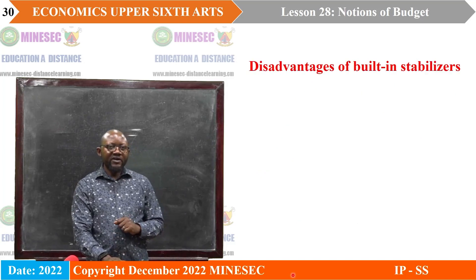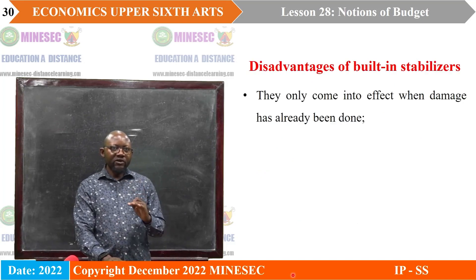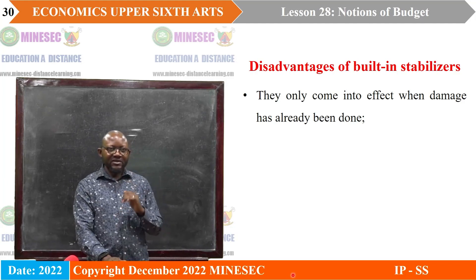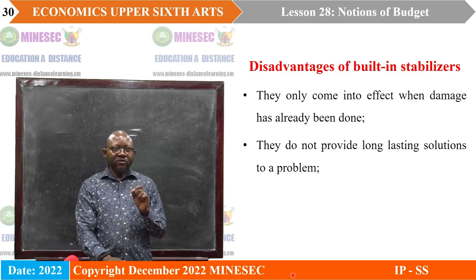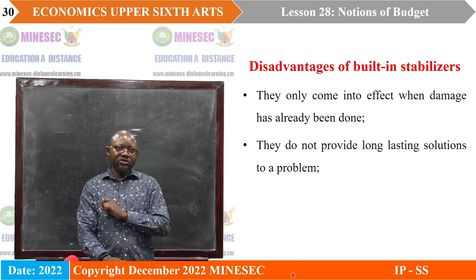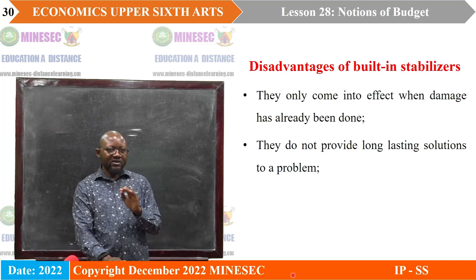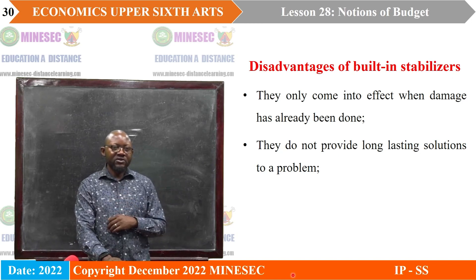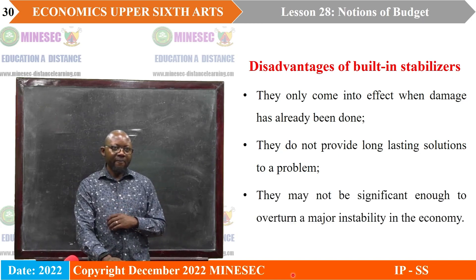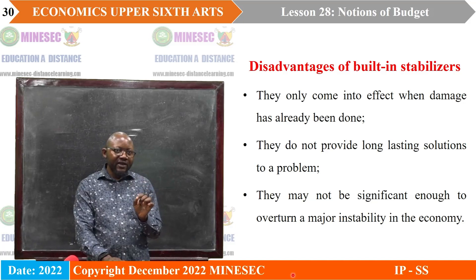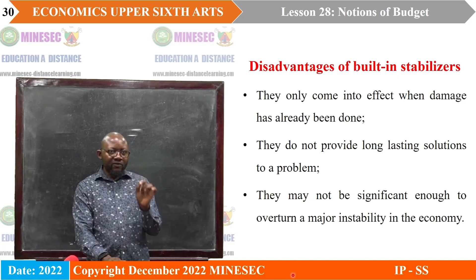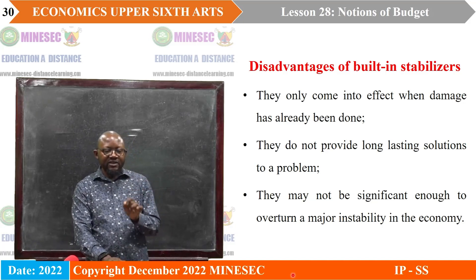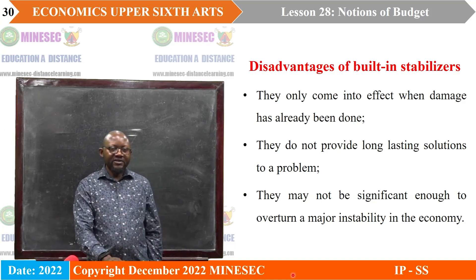Disadvantages of automatic stabilizers: they only come into effect when damage has already been done — meaning they cannot prevent damage from occurring. They do not provide long-lasting solutions; their solutions are just temporary and must be complemented by discretionary fiscal measures for them to be long-lasting. They may not be significant enough to overturn a major instability in the economy.